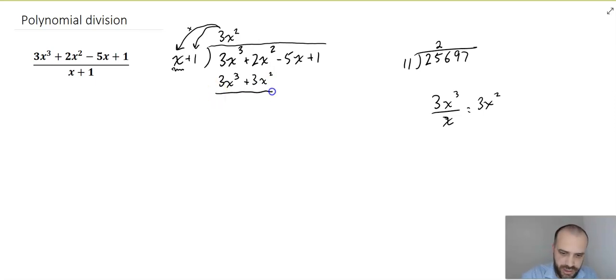Alright, and then we subtract all of that one from the other. Now, this first term, if you've done everything correctly, 3x cubed minus 3x cubed, it's always going to be 0. There's always going to be a 0 there, if you've done it right. If you've done it wrong, then something else is going to appear there. 2x squared minus 3x squared is going to be negative x squared. And just like long division, we drag that next thing down. In this case, negative 5x.